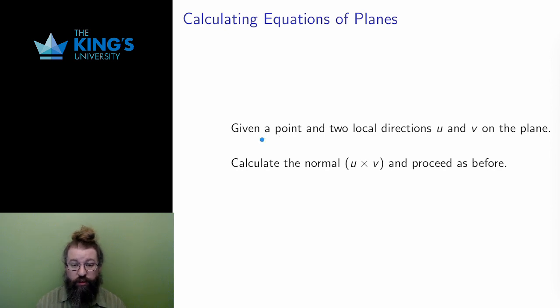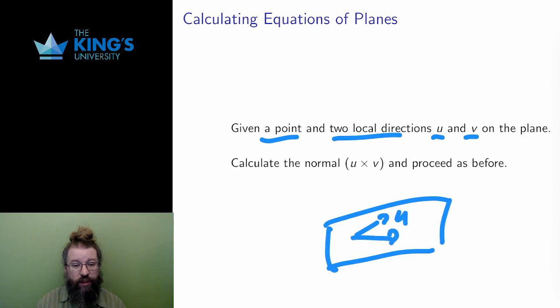When I start with a point and two local directions, I don't have the normal. However, the two local directions are directions on the plane, and I know that the normal is a local direction perpendicular to the plane.